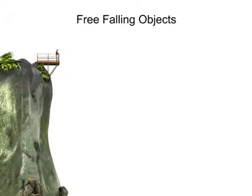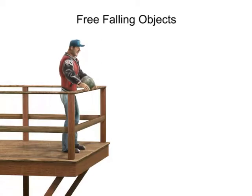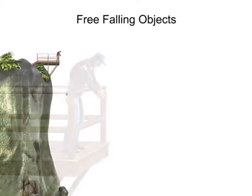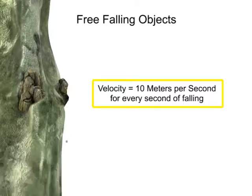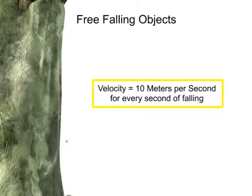To illustrate the effects of gravity on free-falling objects, let's look at what happens when you drop a rock from a cliff. With no wind resistance, the rock's velocity increases by 10 meters per second for every second it falls.